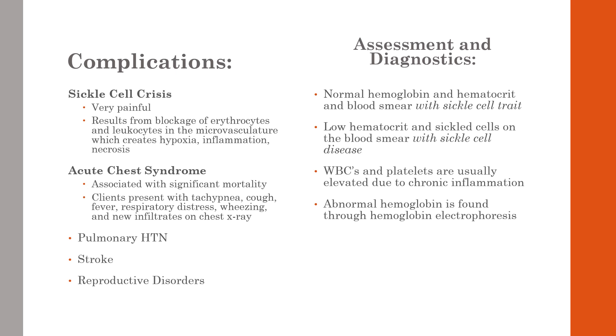Pulmonary hypertension can occur in sickle cell disease because sickle cells get stuck in the microvasculature of the lungs, slowly cutting off circulation, causing infarction of tissue, increased pulmonary pressure, and then pulmonary hypertension. This is a common cause of death in sickle cell disease because it's hard to diagnose in early stages, and once too far along, the damage is extensive and irreversible.